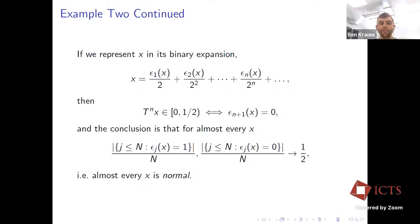The reason I liked this so much is that when I started grad school I thought I was interested in number theory, and this was the first example of what I considered a number-theoretic property — normality — that I could prove using analytic methods. This example extends: you can replace the doubling map with the tripling map and consider things in their ternary expansion, and so forth.